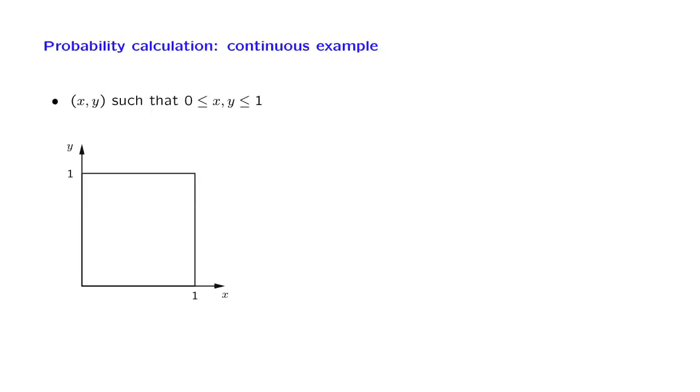We will now go through a probability calculation for the case where we have a continuous sample space. We revisit our earlier example in which we were throwing a dart into a square target, the square target being the unit square, and we were guaranteed that our dart would fall somewhere inside this set. So our sample space is the unit square itself.